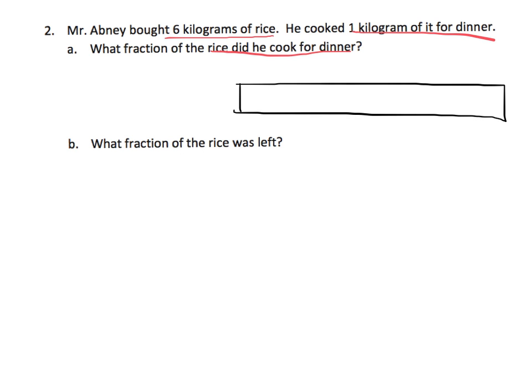I'm going to identify the six. So I'm going to cut it in half, and then I'm going to cut each of those halves into three pieces. So there's my six pieces. And if he cooked one kilogram of it for dinner, what fraction of the rice did he cook for dinner? So the idea would be, this is the one he cooked right here for dinner. So what fraction did he cook for dinner? One-sixth.